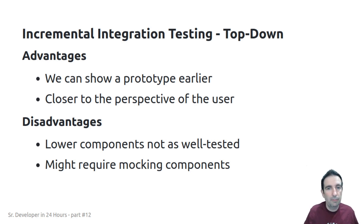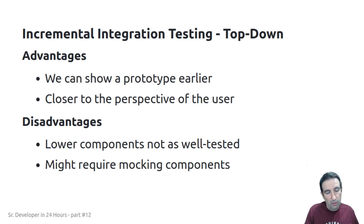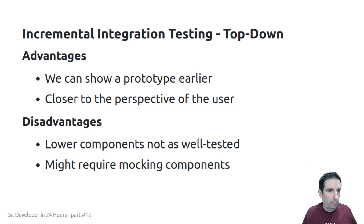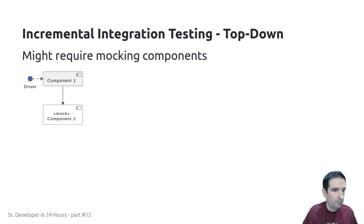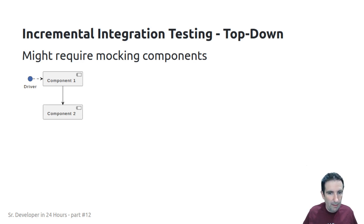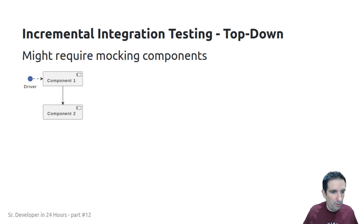Another big disadvantage of top-down is that we might require mocking more components. Because we're building things from the top down, to get higher-level components to work we might have to mock out some of the lower-level components. For example, if we have component one that talks to component two and we don't have component two yet, we might have to mock it. Then when we have a real setup of component two we can replace the mock with the real component.